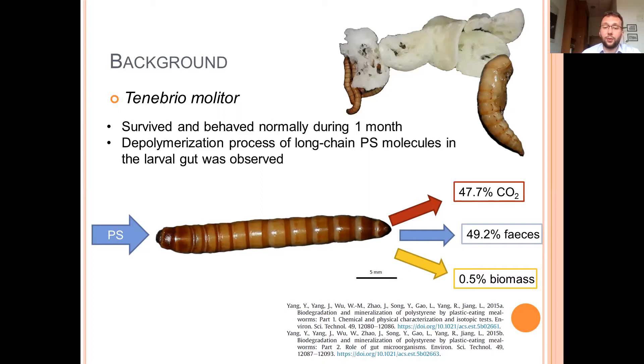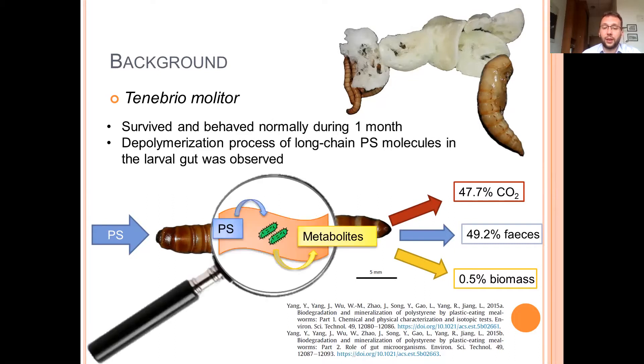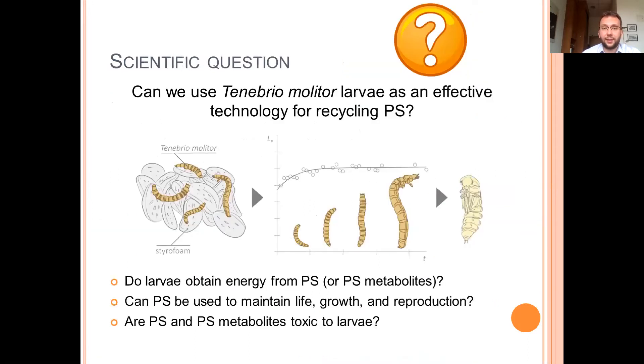We knew that almost 48% of PS carbon is transferred into CO2 as a product of metabolism. Almost 50% of PS carbon is removed from the organism as feces and almost nothing like 0.5% is incorporated into biomass. We knew also that probably some gut microbes are responsible for PS biodegradation.